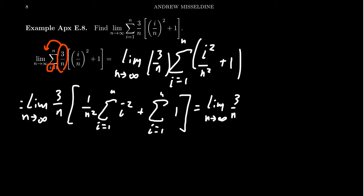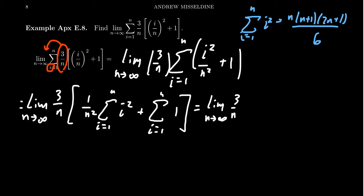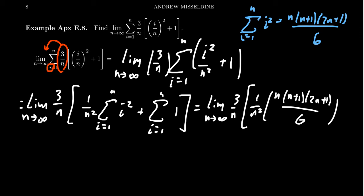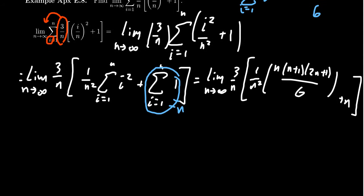For the sum of i² we apply the appropriate formula from the previous video: the sum of i² from 1 to n equals n(n+1)(2n+1)/6. For the sum of 1 added together n times, that's simply n. So we now have the limit as n → ∞ of (3/n) times [(1/n²) · n(n+1)(2n+1)/6 + n]. All the i's are now gone — that's the advantage of those sigma formulas — and we're taking the limit of a rational expression in n.